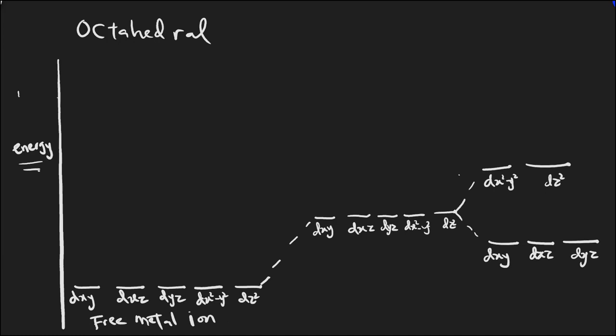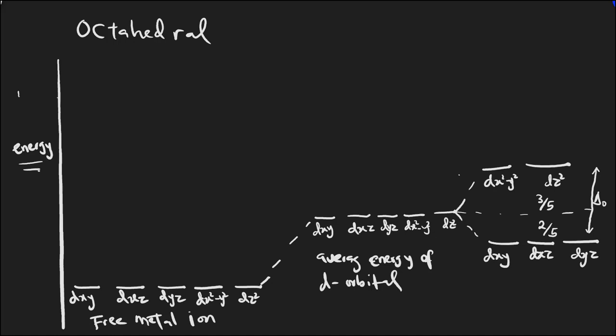This is the octahedral splitting. The splitting energy is measured from the average, with two orbitals going up — dx²-y² and dz² — that is two out of five going higher, and the other three out of five going lower. This is the octahedral splitting and the average energy of the d orbitals. This is the complete splitting diagram for all octahedral complexes.